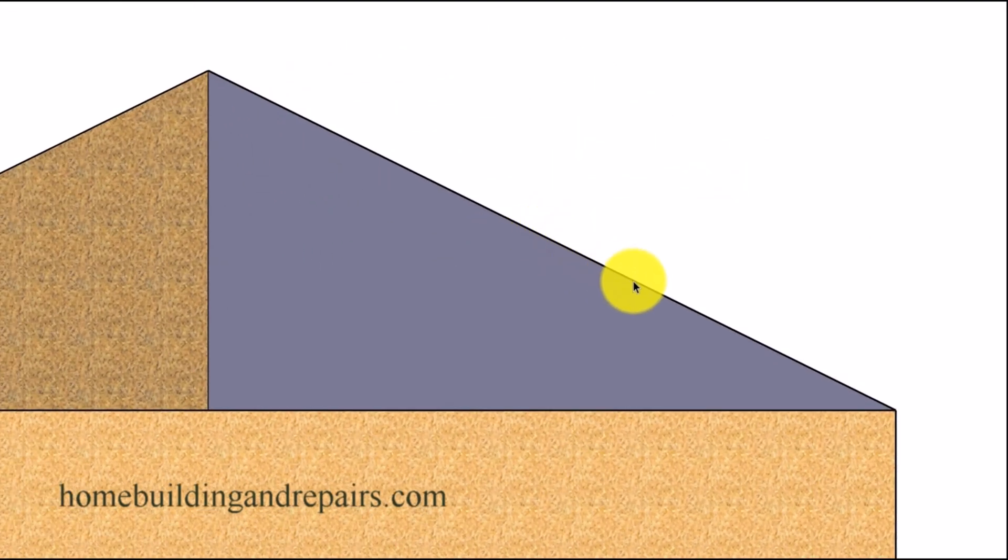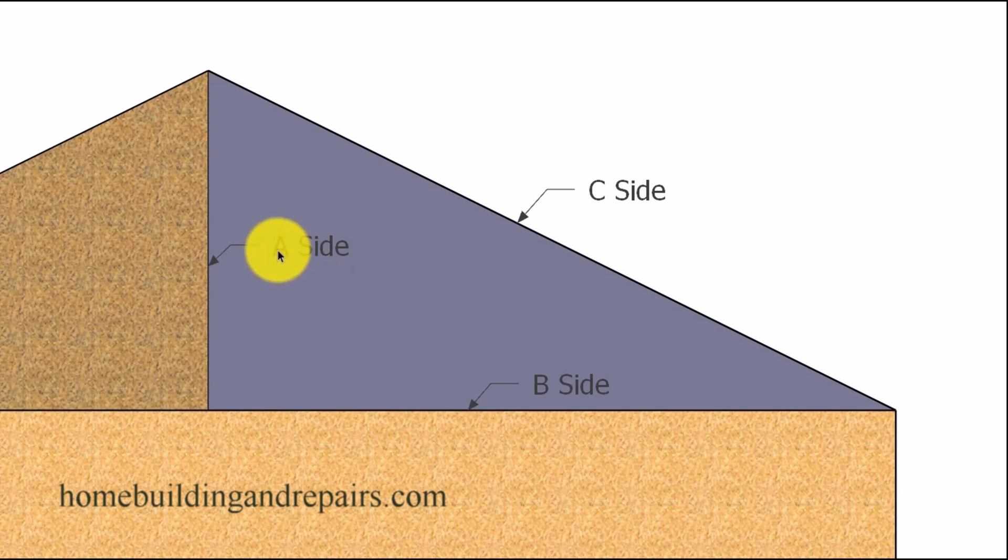So let's go ahead and take a look at what we're actually going to need in the math formula. So we are not going to know what the C side is, but we are going to need to know what the A and the B sides are going to be. And a lot of times when you're figuring out a roof rafter, you're going to have a 5 and 12 pitch, for example. And I believe that's about 22 and a half degrees.